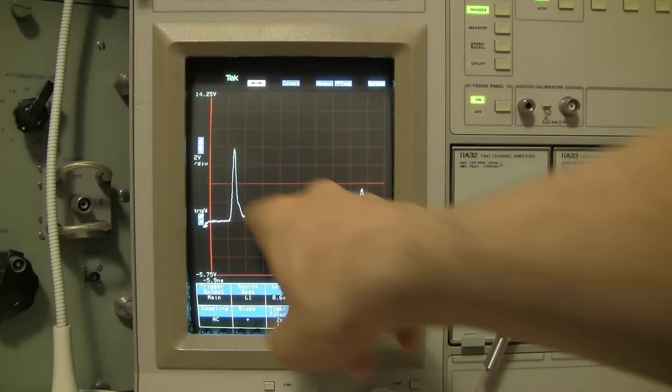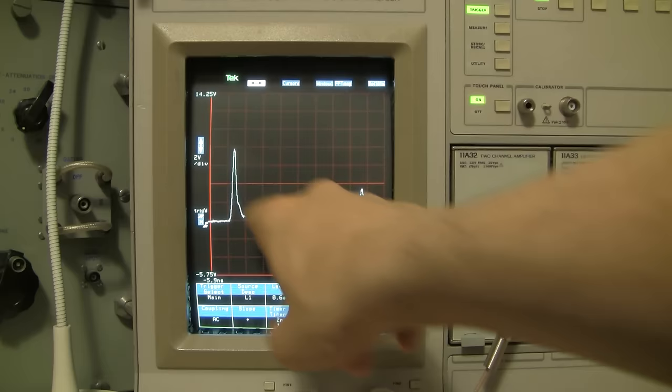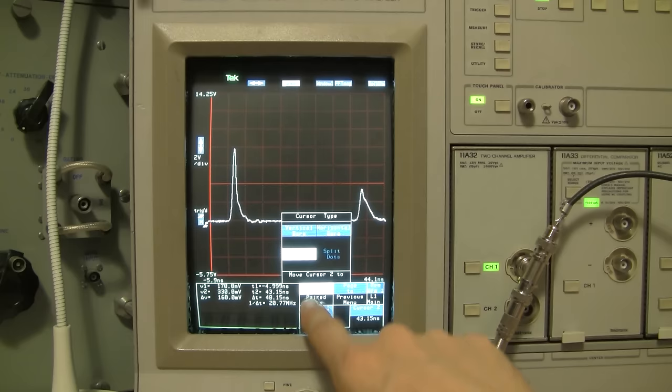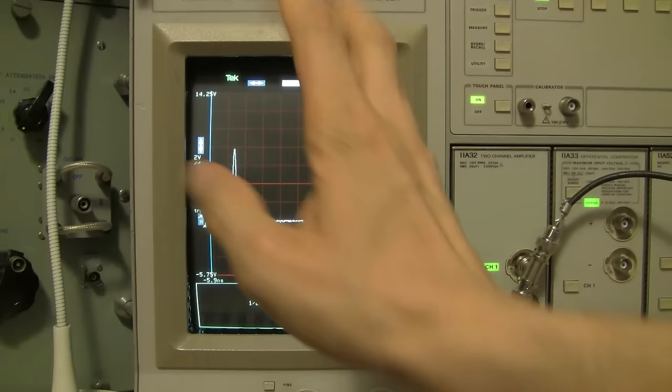The first pulse that you see coming back is the reflected. So what we're going to do to determine the time that it takes to go from this end to this end and come back again is we're going to use our cursors and measure that in nanoseconds. So on your DSO you want to turn your cursors on. I've got a pair of dots turned on here so I'm going to go to vertical bars. So here's my vertical bars.